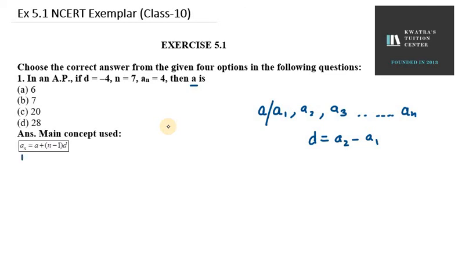So, A_N equals 4 here. A equals, what we need to find A here, plus N. N is 7, 7 minus 1. D. D is minus 4.